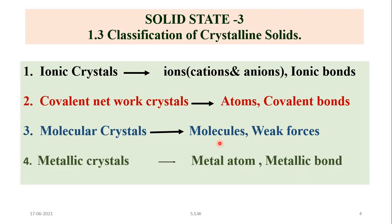The fourth type is metallic crystal. In metallic crystals, metal atoms are the constituent particles, held together by metallic bonds — the force of attraction between positively charged metal ions and delocalized electrons. So crystalline solids are classified into four types: ionic crystal, covalent network crystal, molecular crystal, and metallic crystal, based on constituent particles and inter-particle forces of attraction.